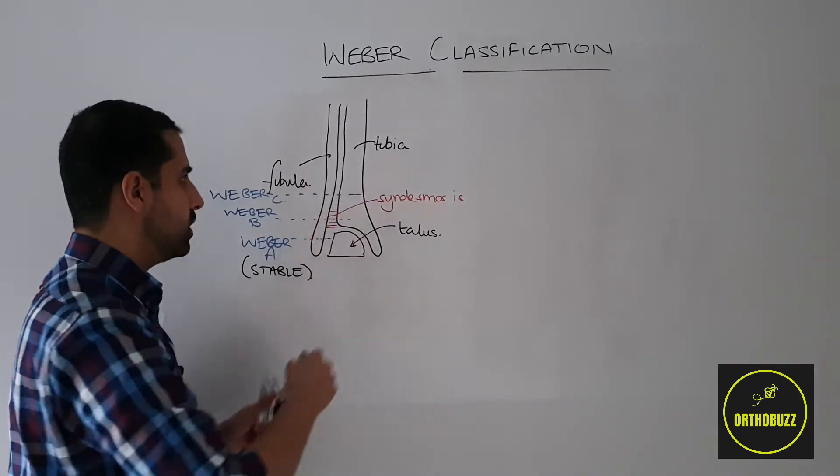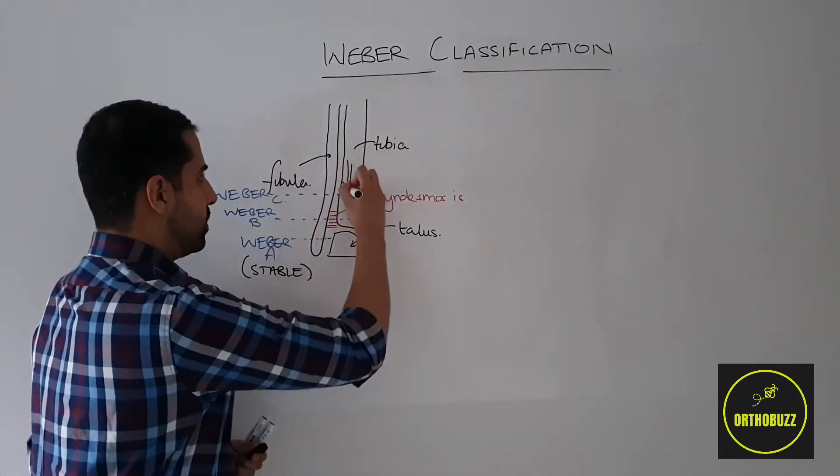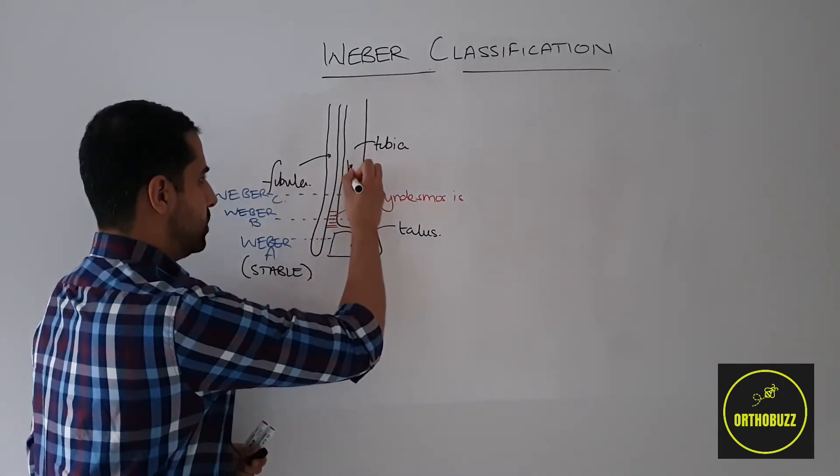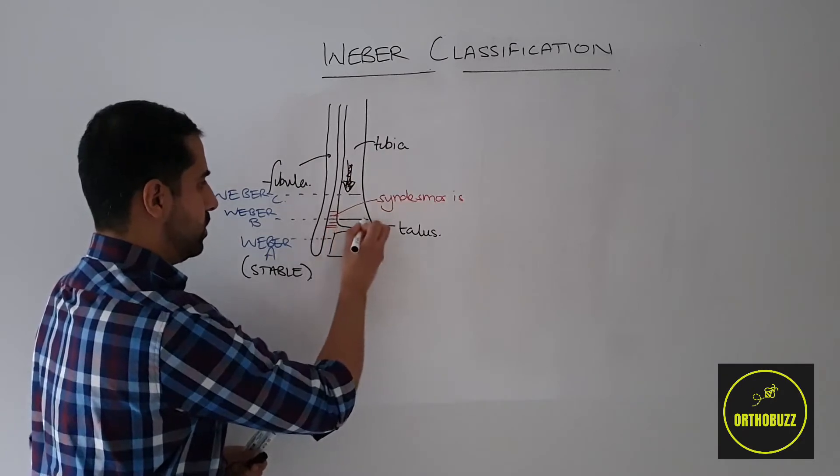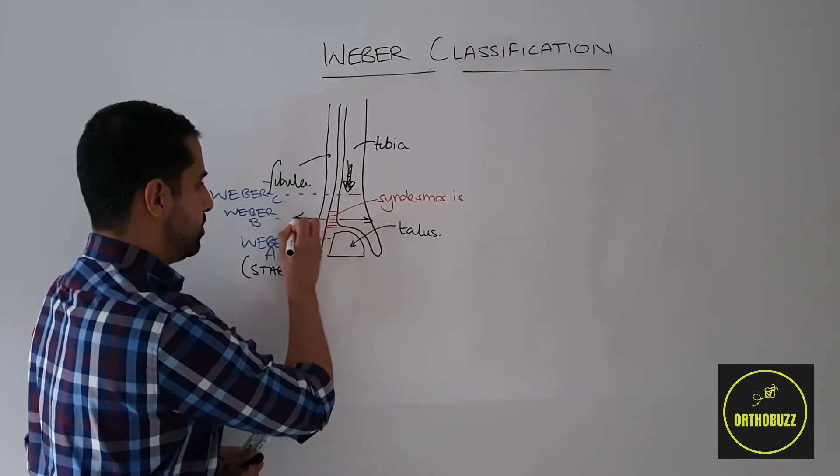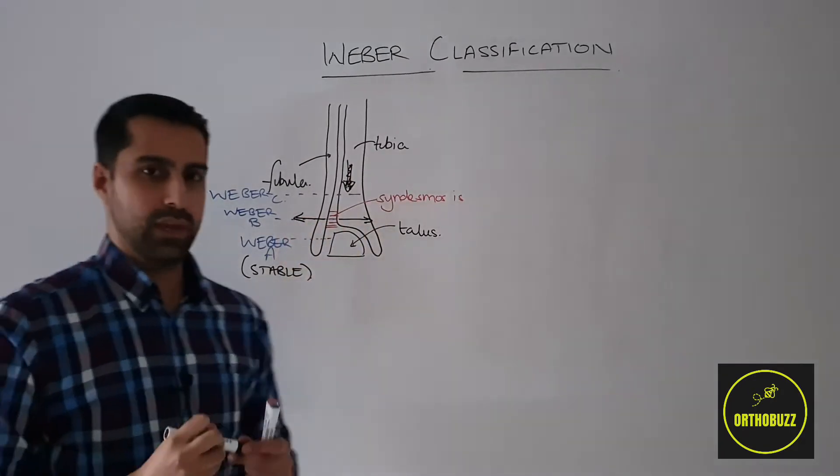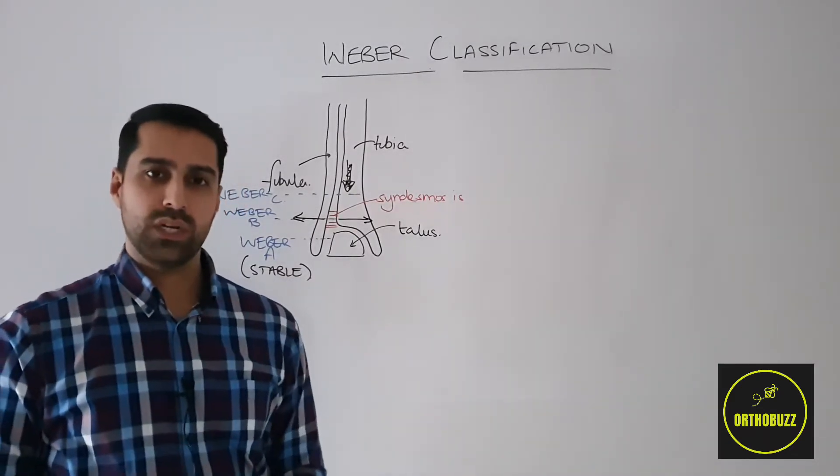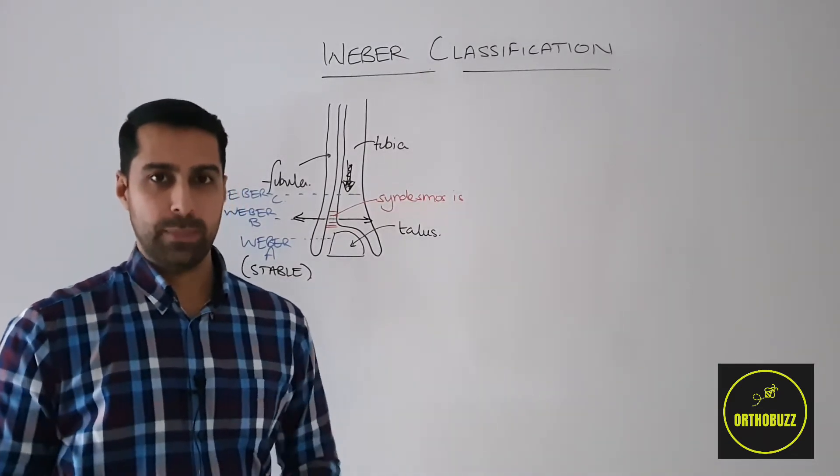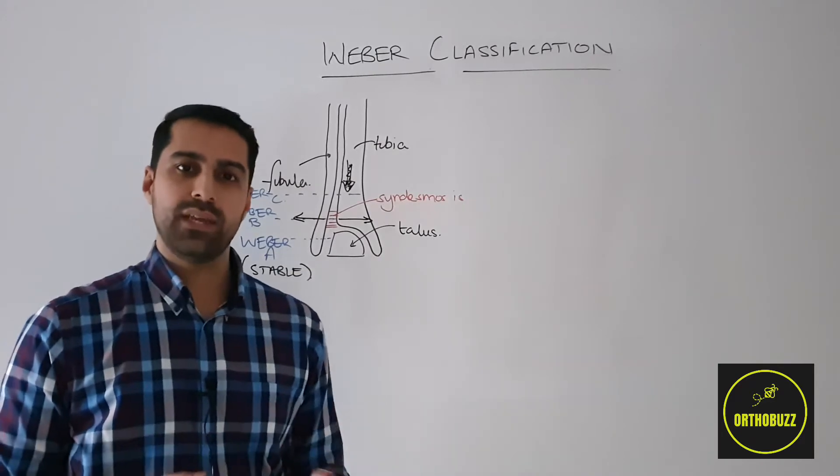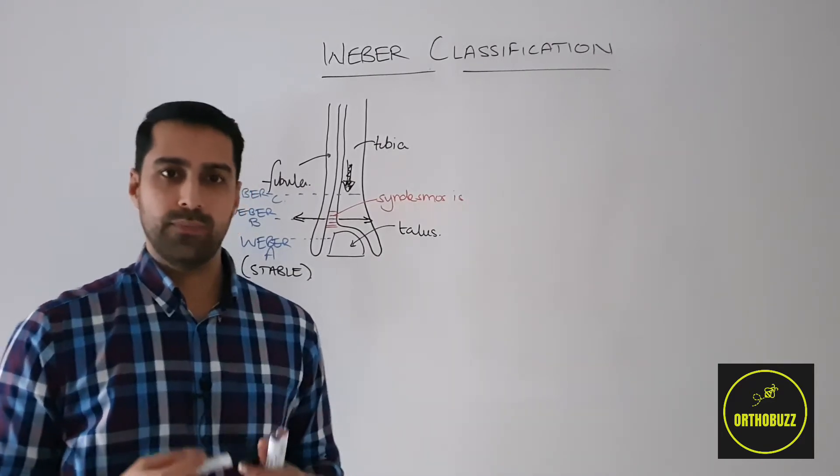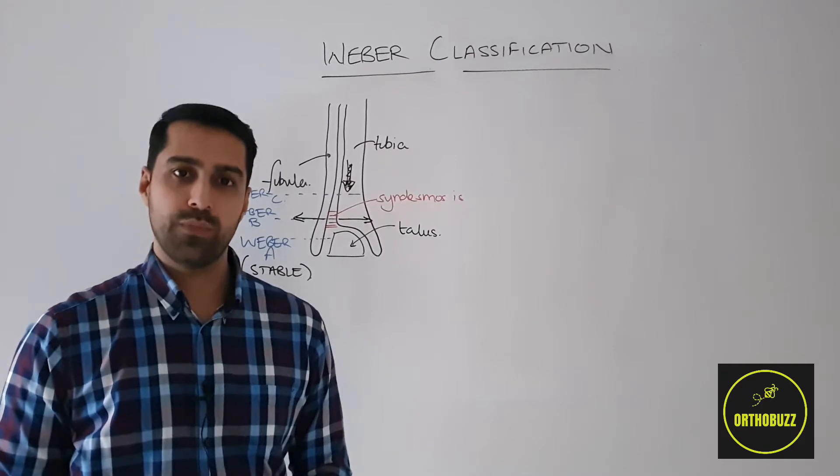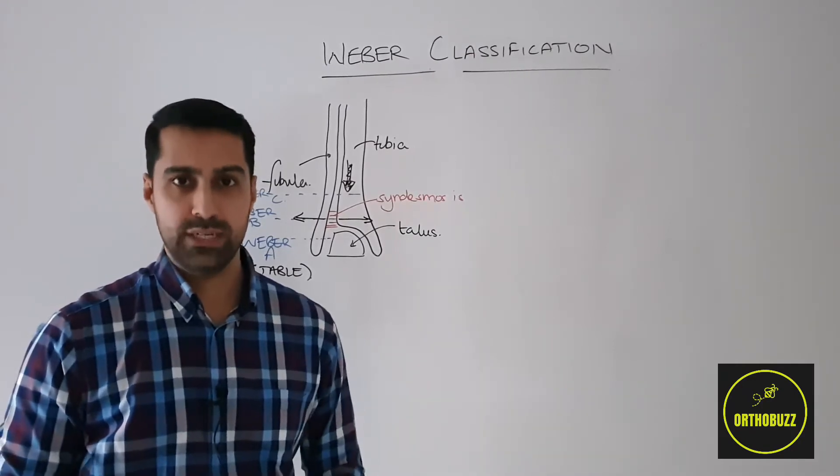We can imagine if we put weight through our ankle, there's a risk that this may displace the tibia and fibula and therefore lead to an unstable ankle. Therefore, Weber C fractures are most ideally treated with an open reduction and internal fixation procedure.